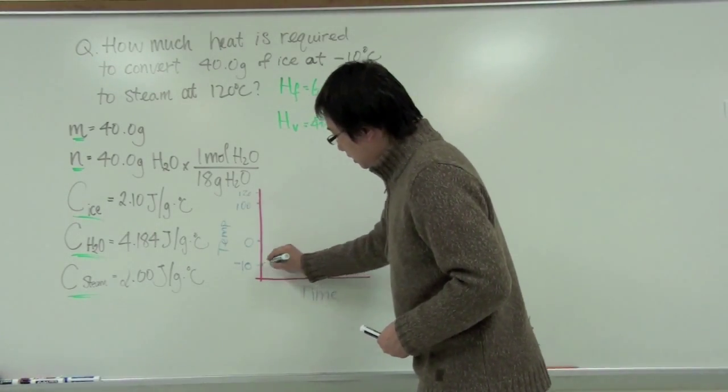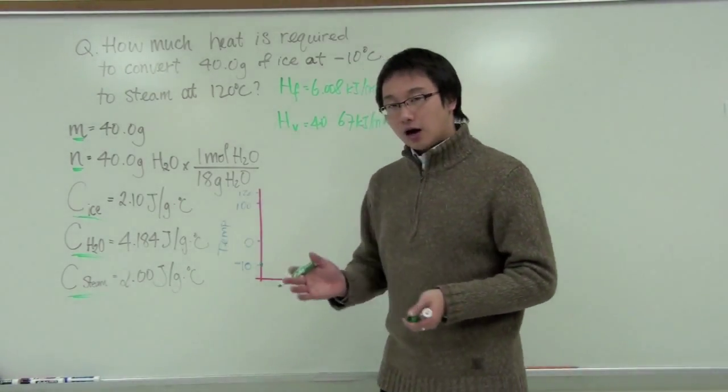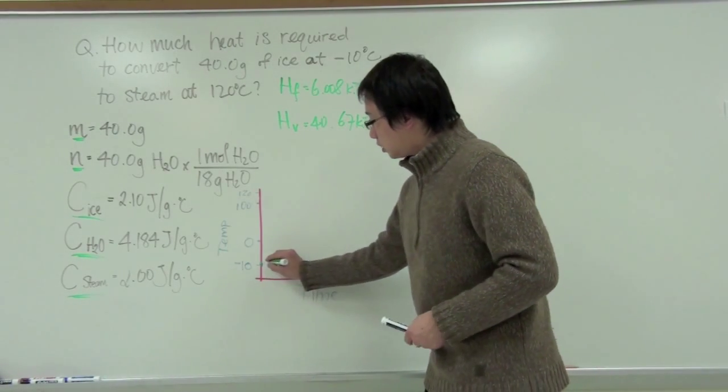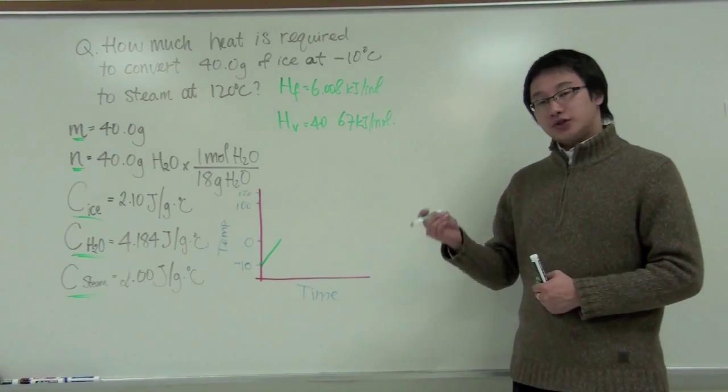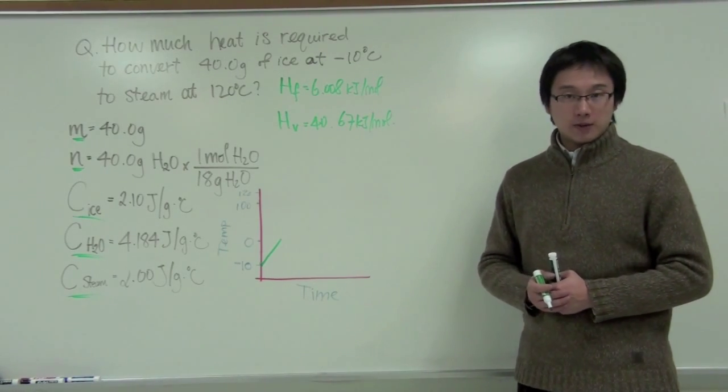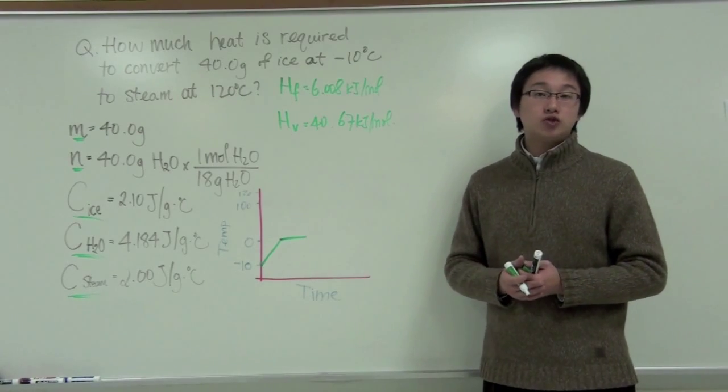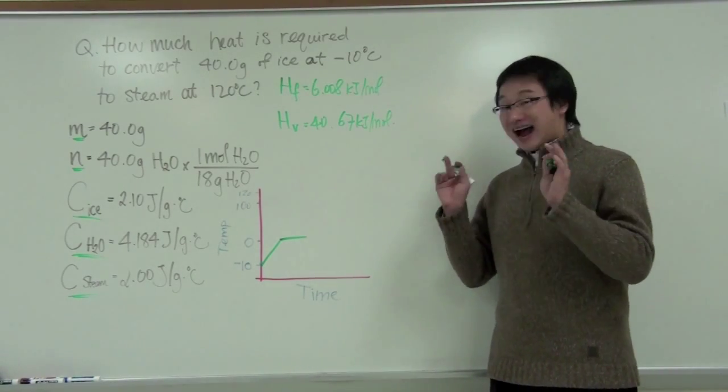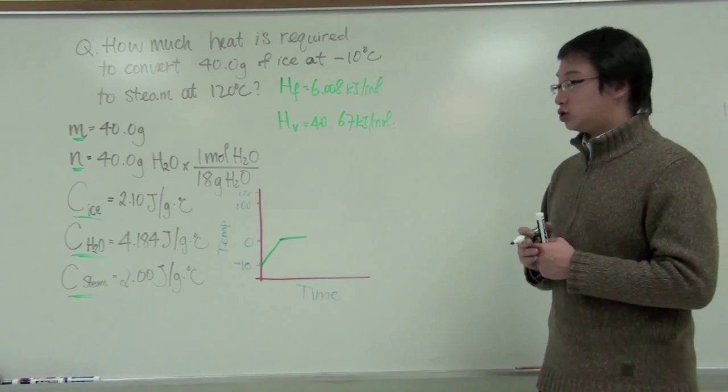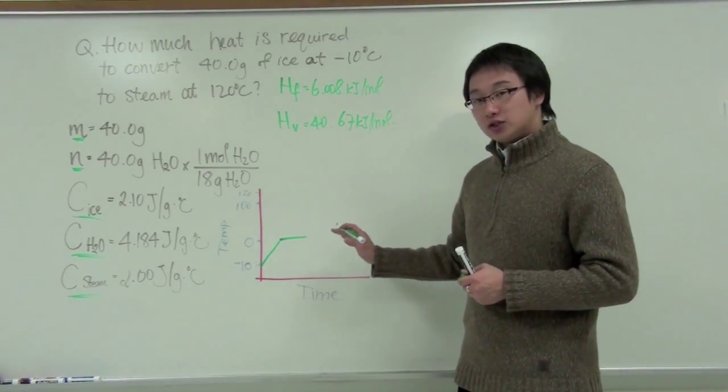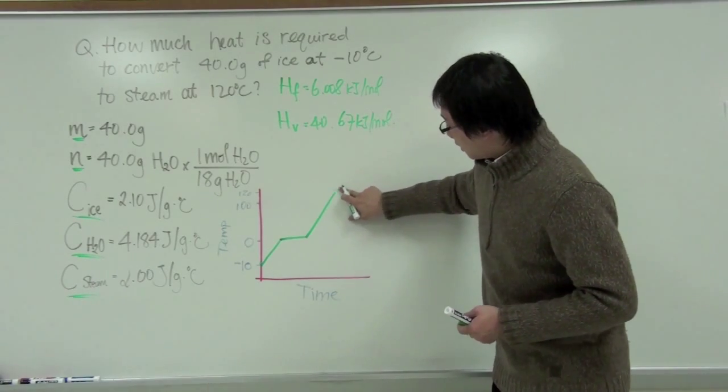Right now we are at negative 10 degrees Celsius. Since it is an ice cube and it is not changing state yet, it will increase temperature as we supply heat. Once it reaches zero degrees Celsius, it will stop increasing temperature and it becomes flat. The reason why it becomes flat is because all the energy being supplied to the ice cube is now being used to change state but not the kinetic energy, so we don't see any change in the temperature. After all the ice is changed to water then the temperature would go up again all the way to 100 degrees Celsius.